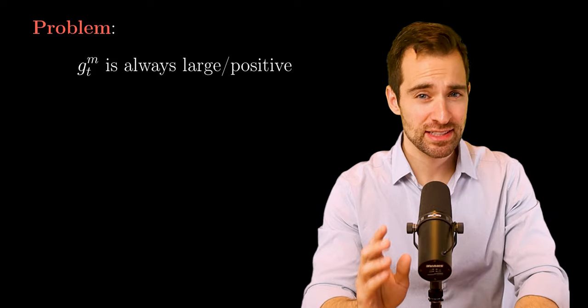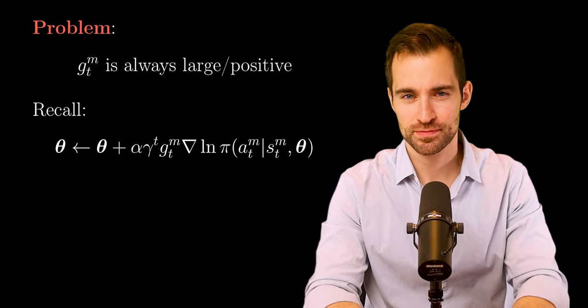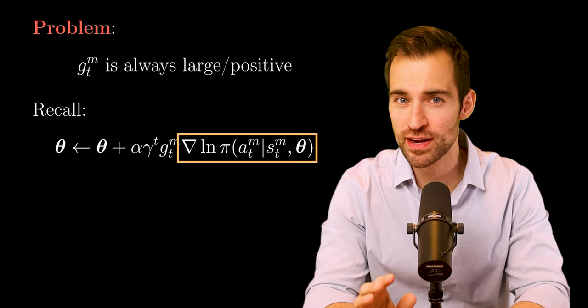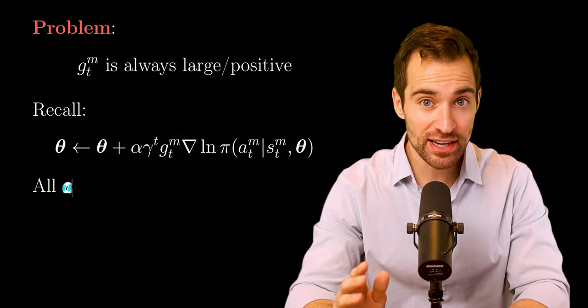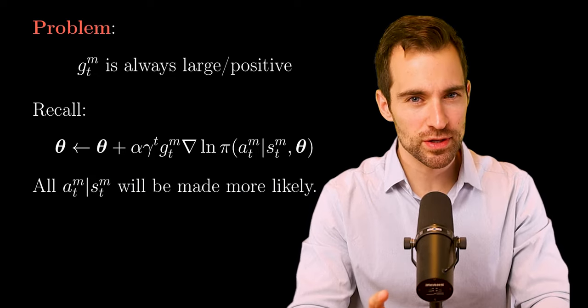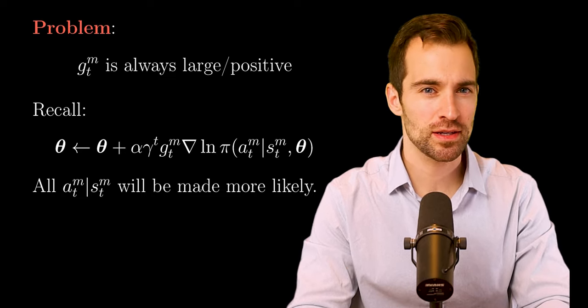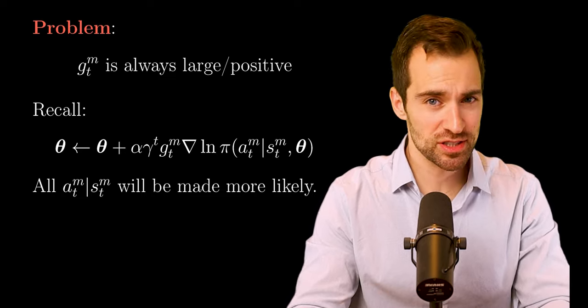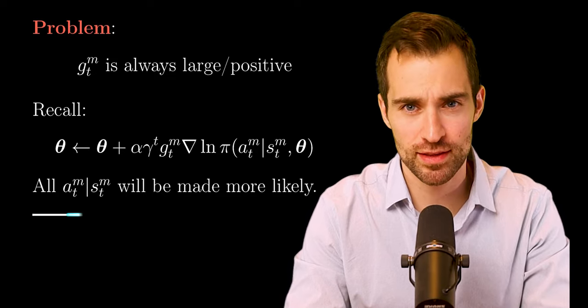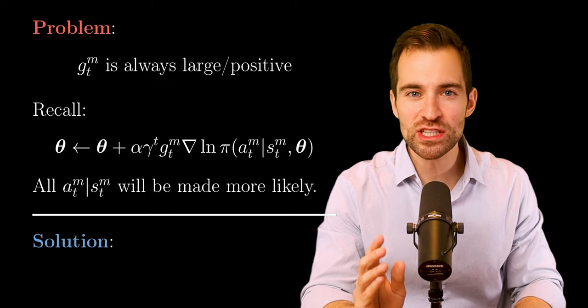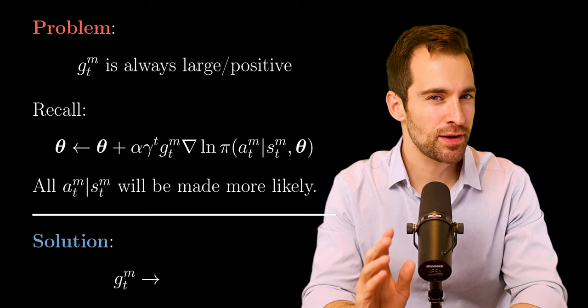But for now, I'll explain why we have this problem. It comes from the fact that in this case, the return is always large and positive. And to see why that's no good, recall our update rule. Remember, this is the direction we need to nudge theta to make this action in this state more likely. And since the return is always positive, then all actions in every state visited will be made more likely. In other words, the policy never learns to not do things. It only learns to do more good things, which is everything in this case. The optimal policy is only discovered when the really good things have had a long time to overwhelm the pretty good things. So what's the solution? Well, the problem is the always positive return. So let's replace it with this, where I'm introducing a new function.